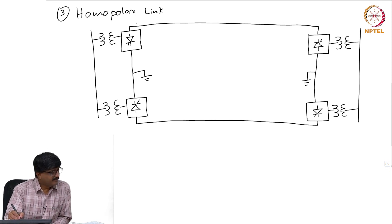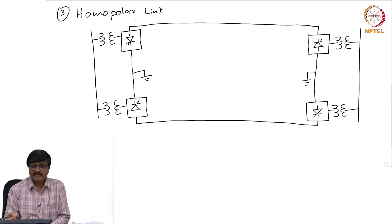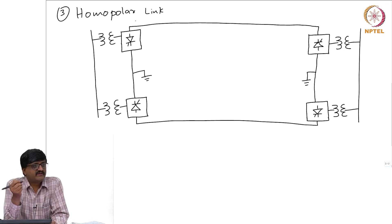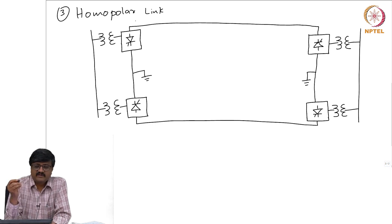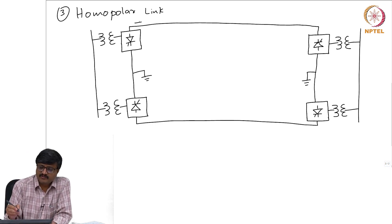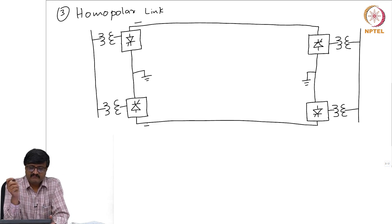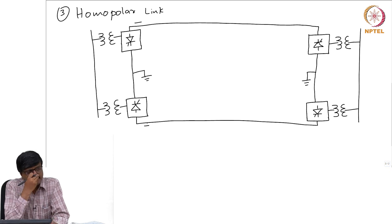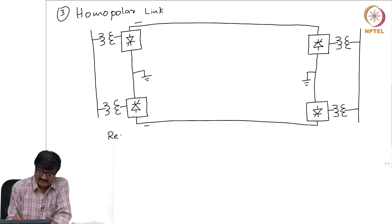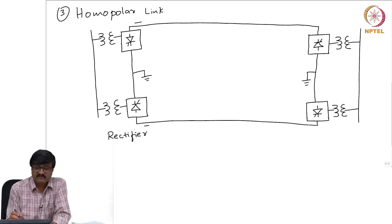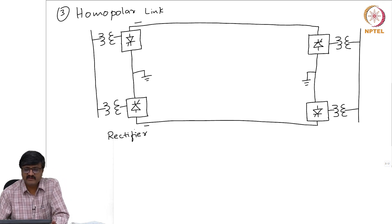In the case of homopolar, both conductors are at the same potential with respect to ground, and we saw that having negative potential will result in less corona compared with positive potential. So both the conductors are at the negative potential. Again, the left side is rectifier — it is the rectifier. Please note this is different from bipolar; notice the difference between the bipolar and the homopolar links. And this side is the inverter.